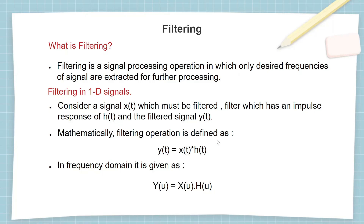Now let us consider filtering in one-dimensional signals. One-dimensional signals are signals which have only one independent variable which is continuously varying — that is time or space. Consider a signal x which must undergo filtration and a filter whose impulse response is h. Now if we convolute x with h, we get an output signal y which is the filtered version of x.